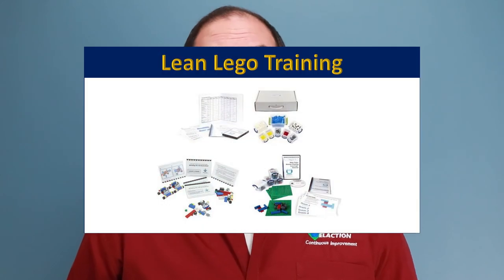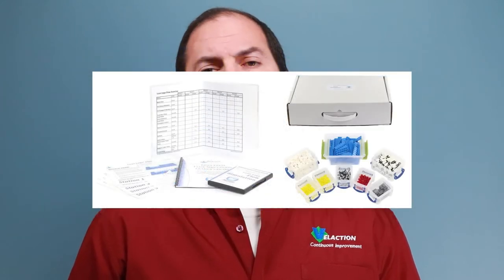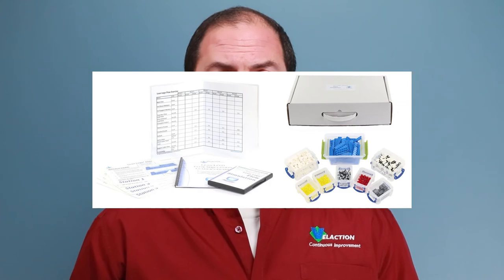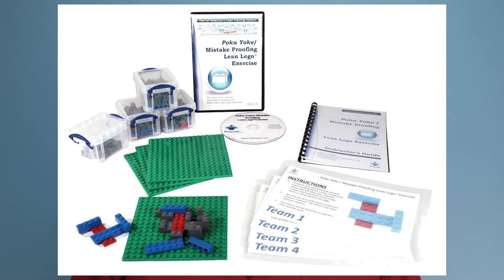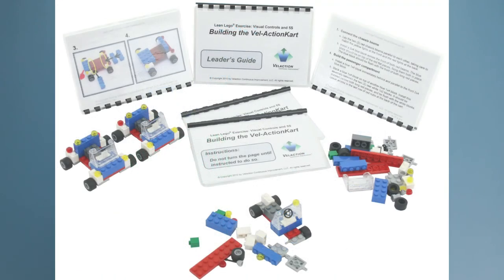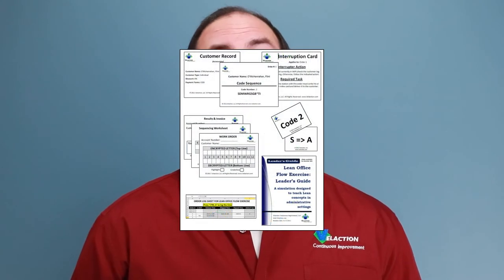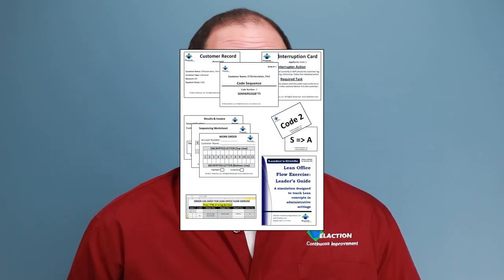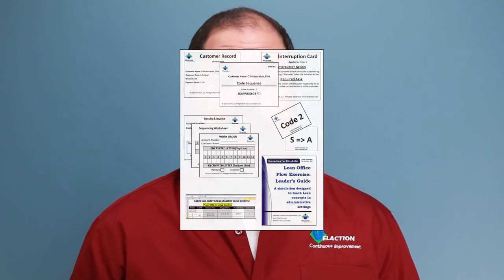As part of the lean training system this video comes from, we offer a variety of lean lego training packages. These include our lean lego flow simulation, mistake proofing or poka-yoke lean lego exercise, and our visual controls and 5S lean lego exercise. We've also got an office flow simulation for those not implementing continuous improvement on the shop floor. Click the links in the description below or click on cards that pop up on this video to learn more. We'll also add links at the end.